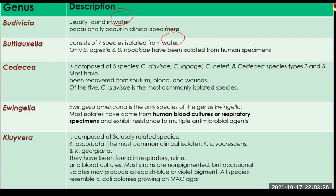CDC group is composed of five species, and these organisms have been recovered from sputum, blood, and wounds. Of the five, C. divisa is the most commonly isolated species.